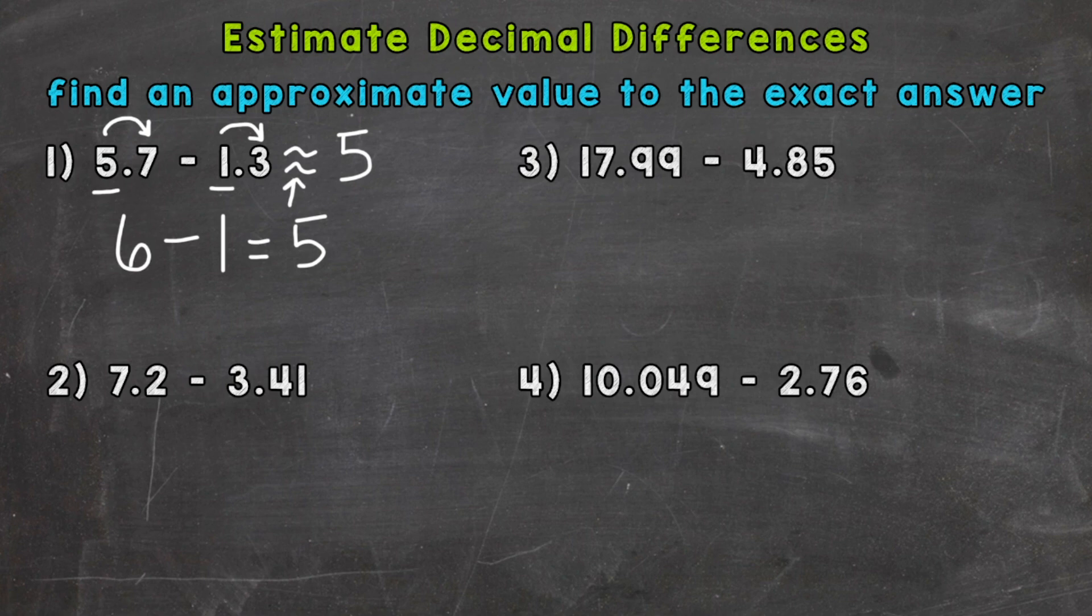So we don't want to use an equal sign. Again, that symbol there means approximately. Now the exact answer is 4.4. So you can see that we have an approximate value there to the exact answer.